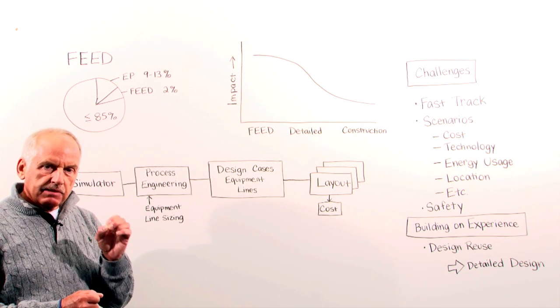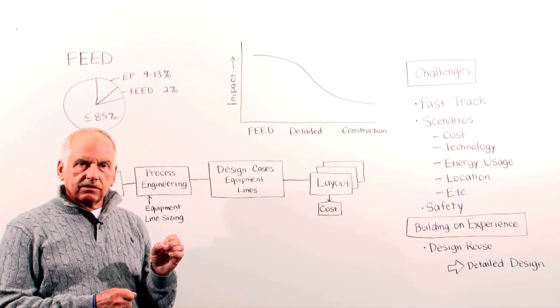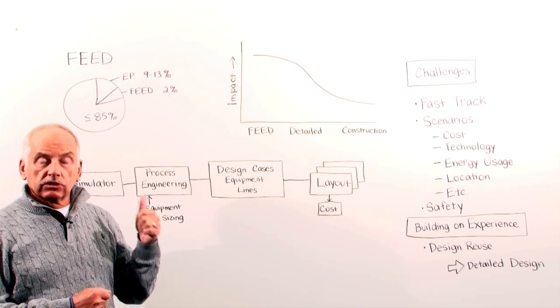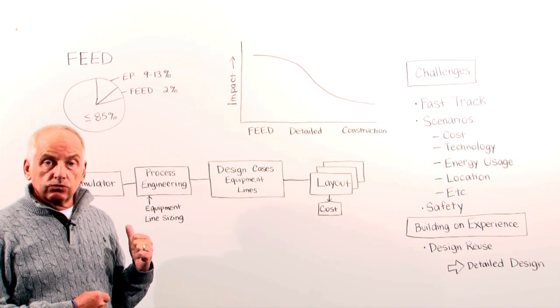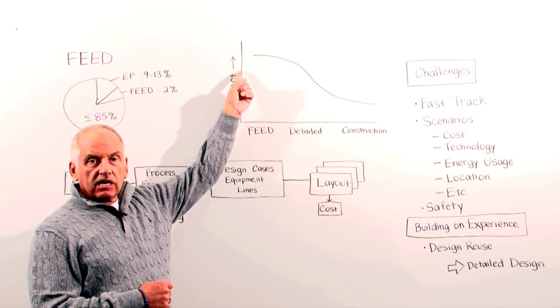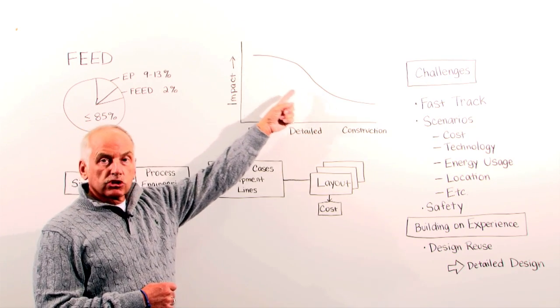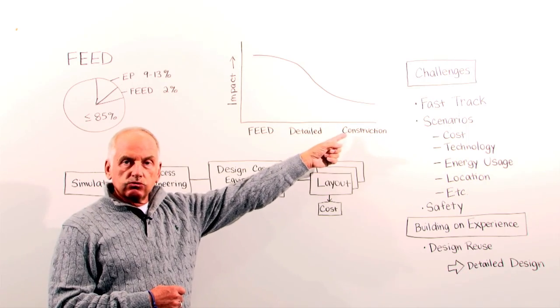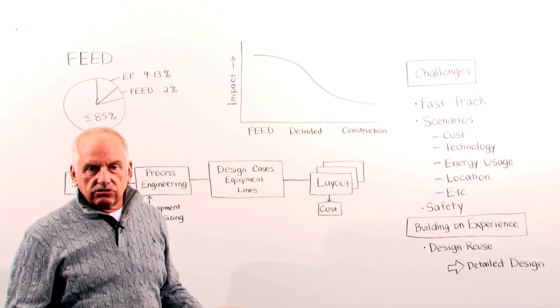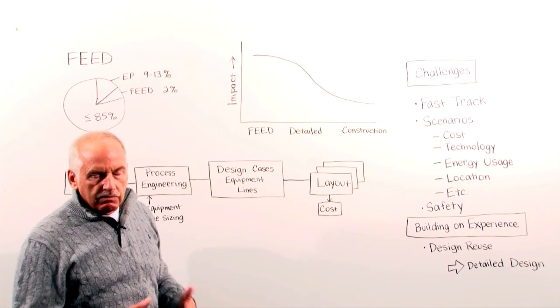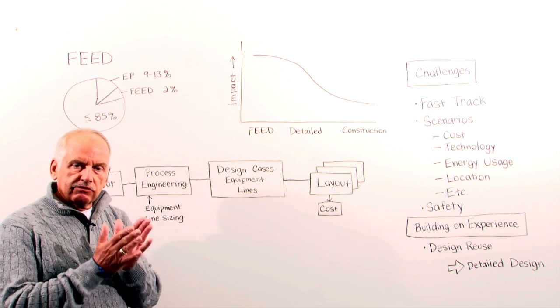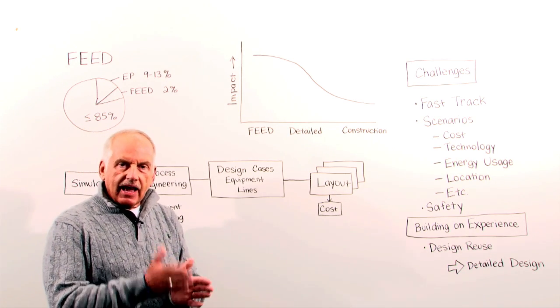But it is a very important part because that two percent has a major impact on the rest of the project, including what's happening in the engineering office and in the field to construct it. If you see here on this particular graph, the impact is very large in the beginning but goes down when you go to detailed design and construction. When you construct the plant or when you're far in the detailed design, what can you change? You may have already bought equipment or made design decisions.